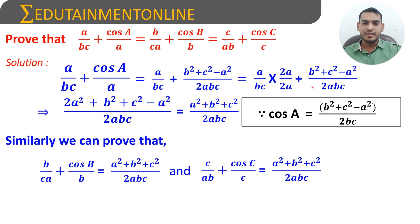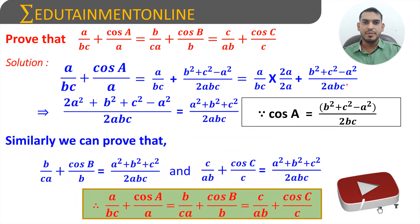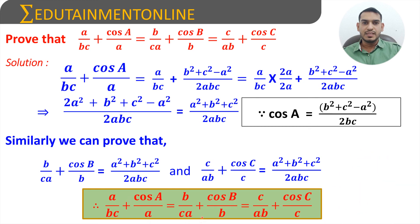Therefore, all three terms are equal, which means a/(bc) + cosA/a = b/(ca) + cosB/b = c/(ab) + cosC/c. Hence proved.